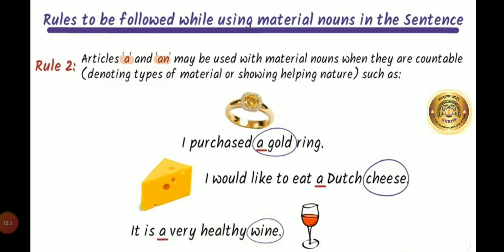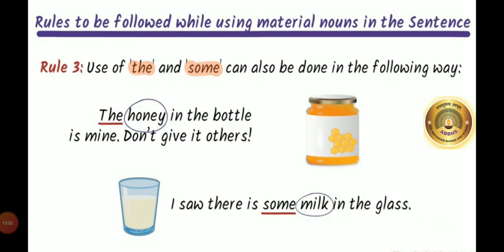Rule two: articles A and AN may be used with material nouns when they are countable, denoting types of material or showing a helping nature. For example: I purchase a gold ring. I would like to eat a Dutch cheese. It is a very healthy wine. Rule three: use of THE and SOME — for example: The honey in the bottle is mine, don't give it to others. I saw there is some milk in the glass.